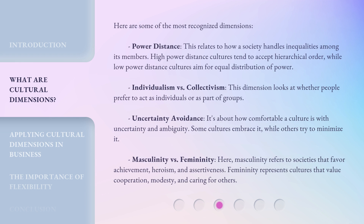Here are some of the most recognized dimensions. Power Distance — this relates to how a society handles inequalities among its members. High power distance cultures tend to accept hierarchical order, while low power distance cultures aim for equal distribution of power. Individualism versus Collectivism — this dimension looks at whether people prefer to act as individuals or as part of groups.